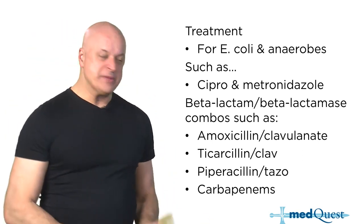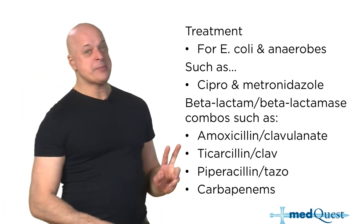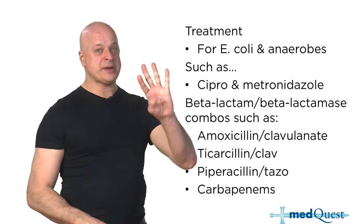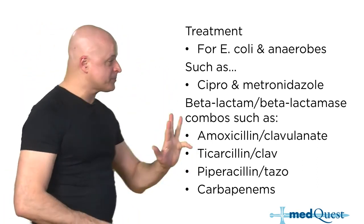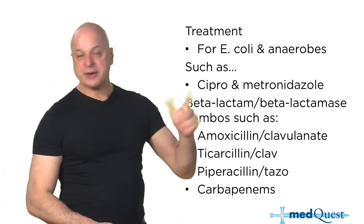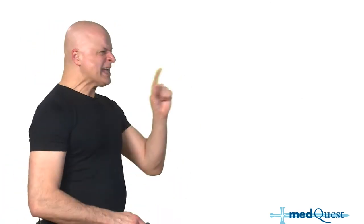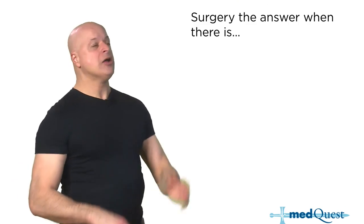Any carbapenem — imipenem, meropenem, ertapenem, doripenem — all of them cover anaerobes, particularly in the bowel.